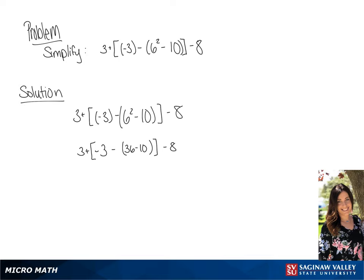Now we are going to further simplify everything in the brackets. So we have negative 3 minus 26 in the brackets, and then we're going to solve what's in the brackets so we can get rid of those.